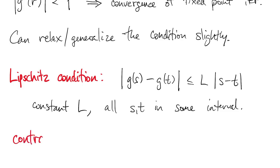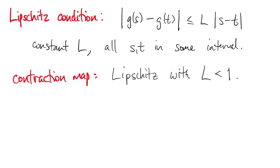And then a contraction map would be the special case of a Lipschitz condition with constant less than 1. We call it a contraction map because after you apply g to all the points in the interval, all the distances between points have gotten smaller. So distances are contracting.